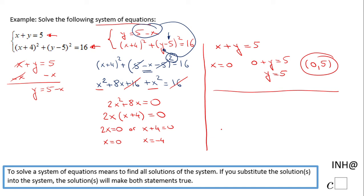Well, as I said, we have a second solution because we have another x, x equals negative 4, right? x equals 0, x equals negative 4.